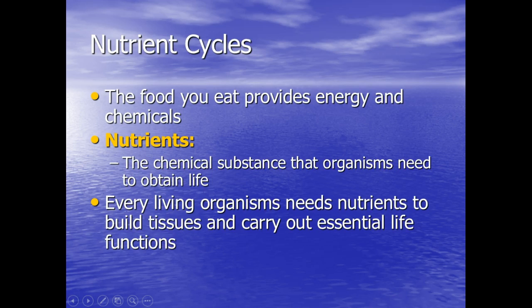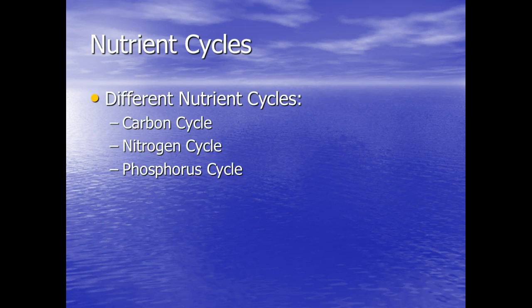The other cycles that we're going to look at are nutrient cycles. The food you eat provides energy and chemicals. These are called nutrients, the chemical substance that organisms need to obtain life. Without these nutrients, life would not be able to be obtained. Every living organism needs nutrients to build tissues and carry out the essential life functions. The three different nutrient cycles that we're going to take a look at are the carbon, nitrogen, and phosphorus cycles.